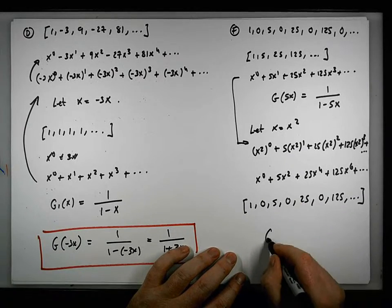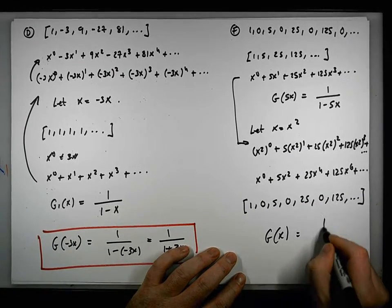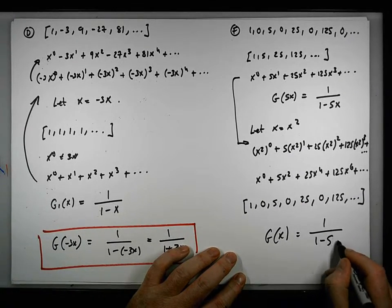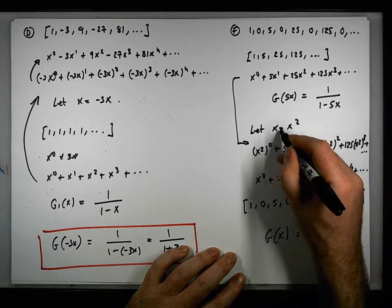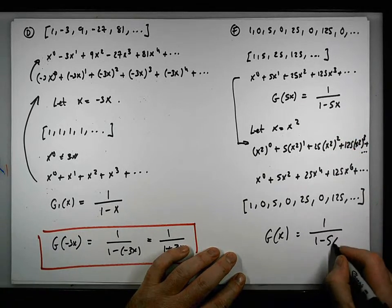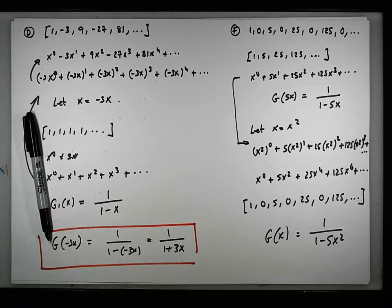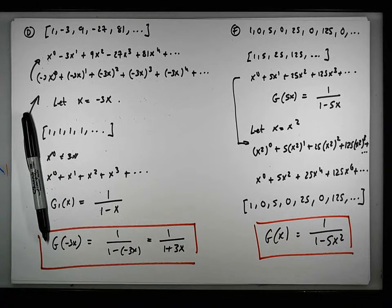So we end up with this generating function equal to 1 over 1 minus 5x squared, substituting x squared for x. That gives us x squared, which is exactly what we required.